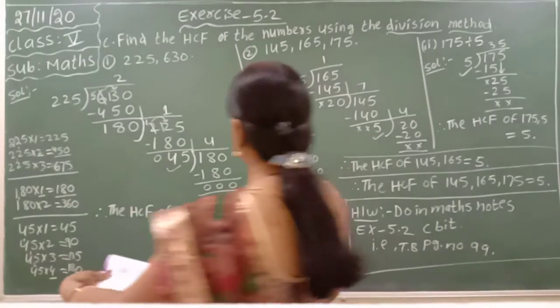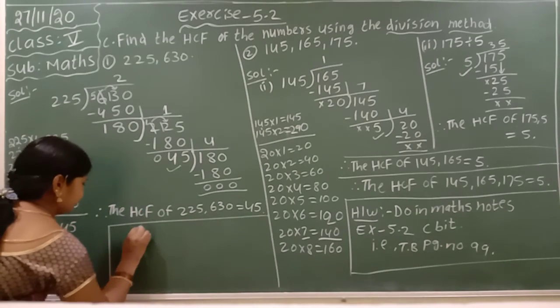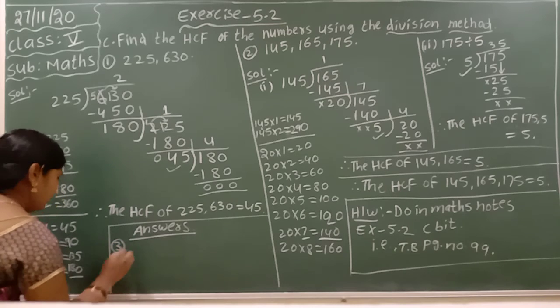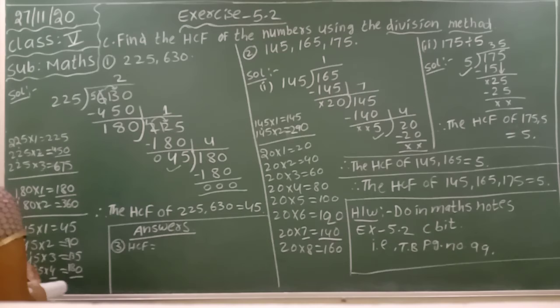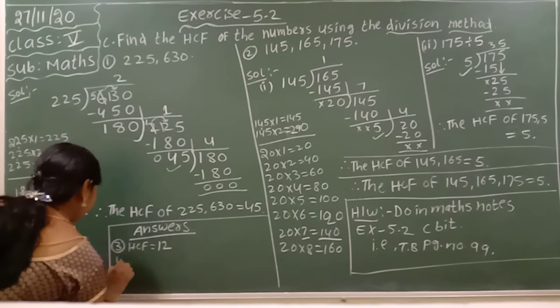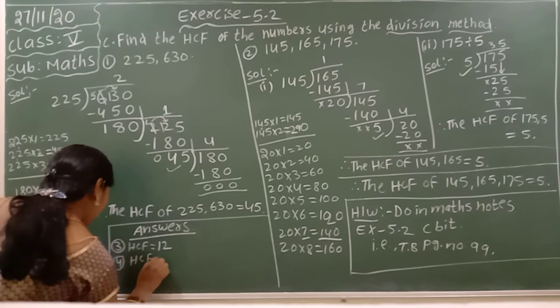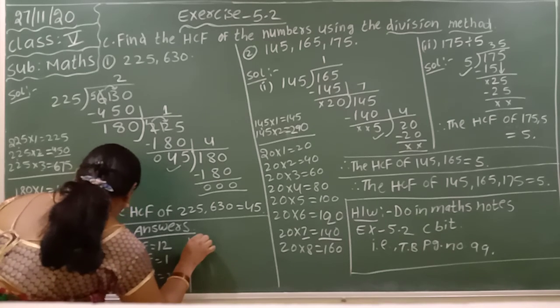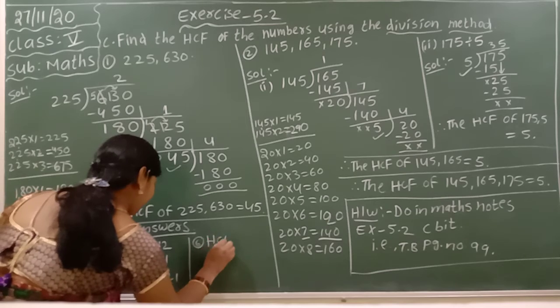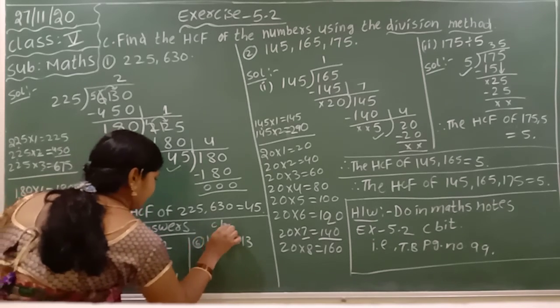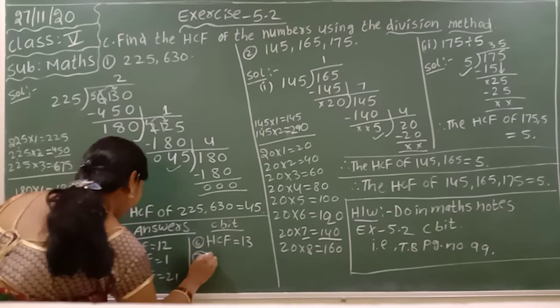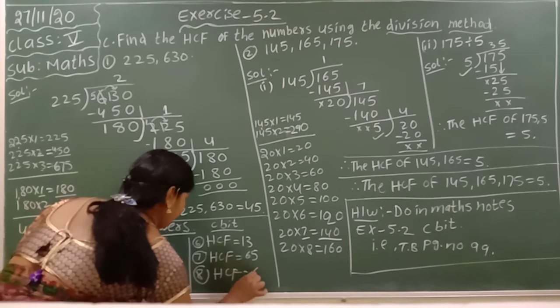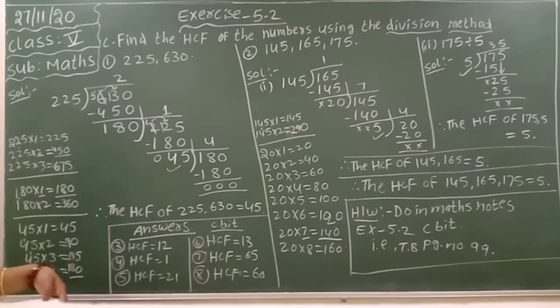If you want it, you have to check your answers also. So, your answers: first, second I explained, the third one - what is the HCF here? You are getting 12. For the fourth one, HCF is equal to 1. For the fifth one, HCF is equal to 21. For the sixth one, HCF is equal to 13. Seventh one, HCF is equal to 65. Eighth one, HCF is equal to 60. These are the answers.